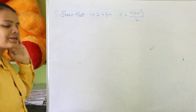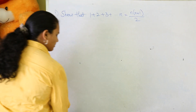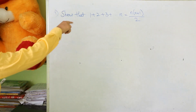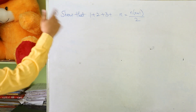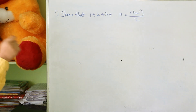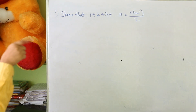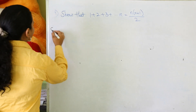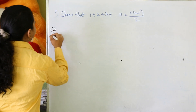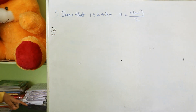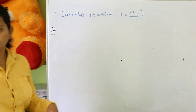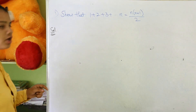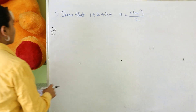Coming back to mathematical induction, where 1 plus 2 plus 3 plus 4 plus 5 goes on till n, which is equal to n into n plus 1 by 2. As you know, the sigma n formula is n into n plus 1 by 2. So just keep that formula aside.